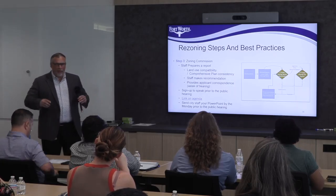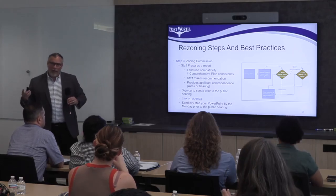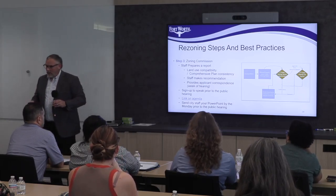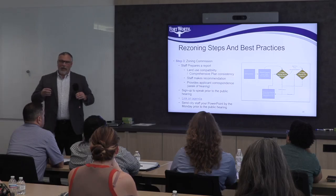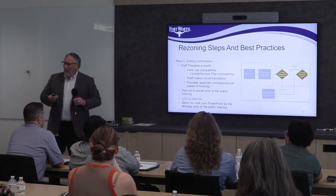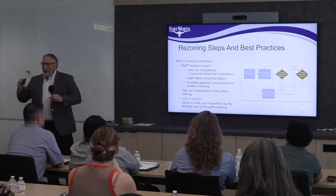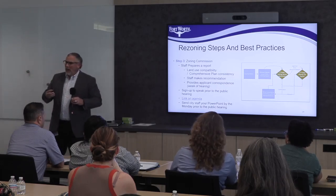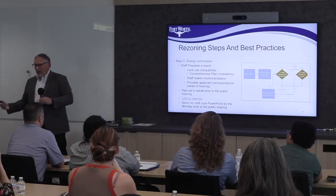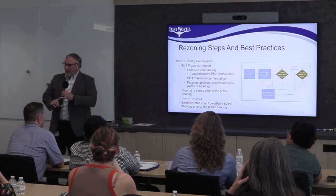For the zoning commission — that's your first public hearing — we prepare a staff report. We're looking at the comprehensive plan, surrounding land uses, and then staff is making a preliminary recommendation. The city council, when making their final determination, is not basing it on one factor. There are a myriad of factors: they're looking at our staff report, which is just one; they're listening to the zoning commission recommendation, which is two; they're listening to what the neighborhoods and property owners have to say, which is three.